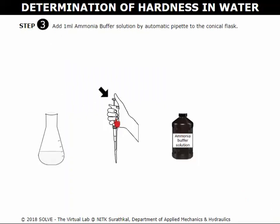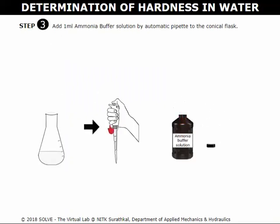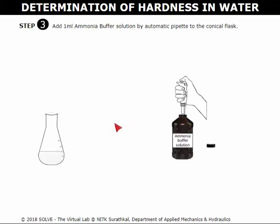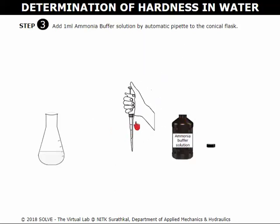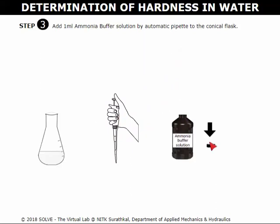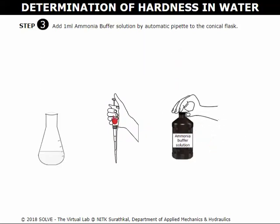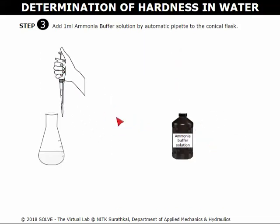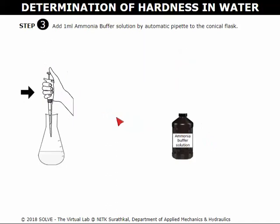Click on the automatic pipette. Click here to open the lid of the ammonia buffer solution. Now pipette 1 ml of ammonia buffer solution. Close the lid. Click on the pipette and release the solution into the conical flask.